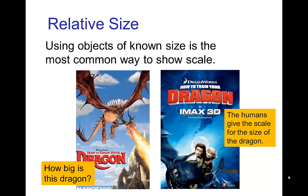One of the simplest ways of doing that is to use objects of known size and show contrast. In that sense, the poster on the left is somewhat ambiguous in terms of the size of the dragon because there's nothing that we can really compare it to.